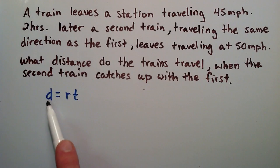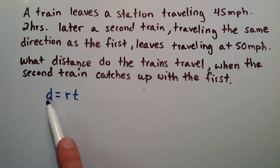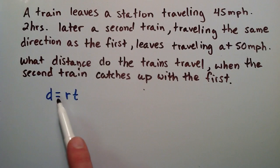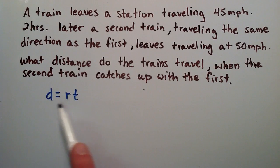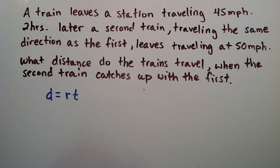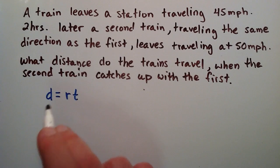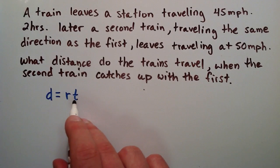We have d equals rt — distance is equal to rate times time. This will be the equation we'll use to solve this question. We need to figure out what our rates and times are, and then we can find the distance.